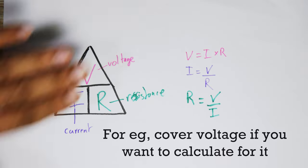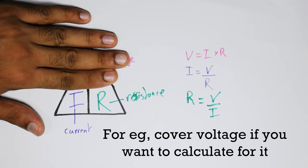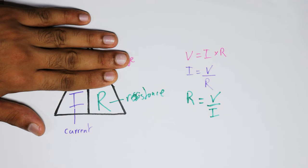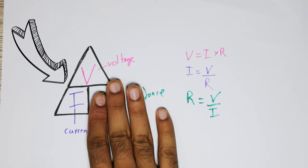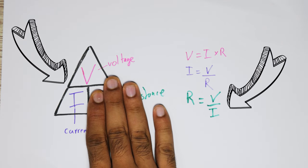To use the triangle, firstly cover up the value that you want to calculate for. Now, look at the other two values that are not covered up. If these two variables are side by side, that means they will be multiplied to get the value that you desire. If they're on top of each other like this, they will be divided in that appropriate order.